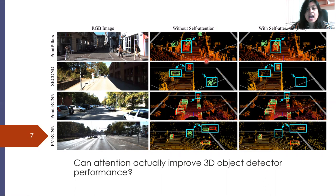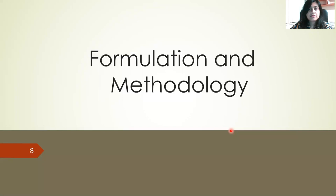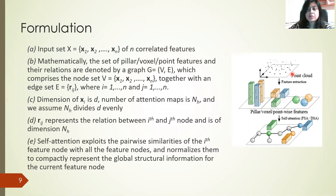We can also eliminate false positives. Regarding the formulation of the problem, we have our point cloud which can be represented using pillars, voxel, or point features. We propose to represent them as nodes in a graph, and then we can exploit self-attention to compute the pairwise similarities between feature nodes. For a given feature node, we can find the pairwise similarities with all other nodes and then normalize them to compactly represent the global structural information for that particular feature node.